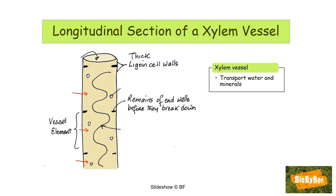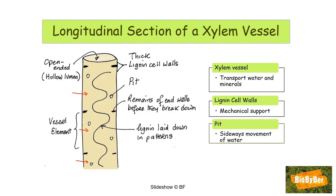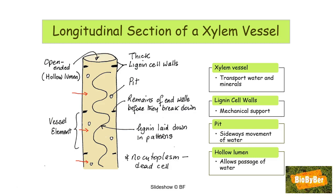The xylem vessel has thick lignin cell walls. Lignin is a material used to make cell walls in xylem — it is stronger than cellulose, which is the normal carbohydrate found in plant cell walls. The lignin is laid down in patterns, usually of a spiral shape. Xylem vessels also have pits — small holes in the side walls that allow sideways movement of water. The vessels are open-ended with a hollow lumen suited to water passage. Importantly, xylem vessel elements contain no cytoplasm; at maturity, xylem cells are dead cells and dead tissue.